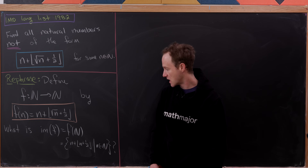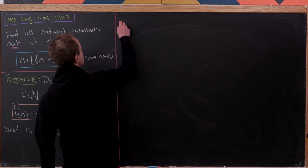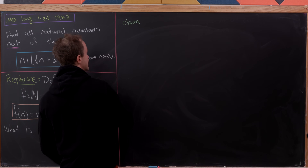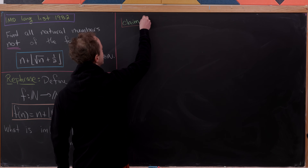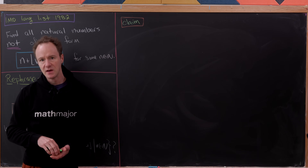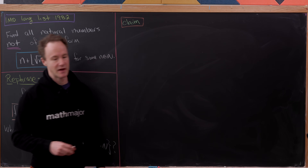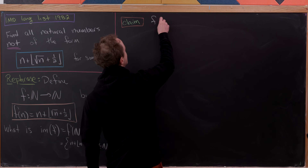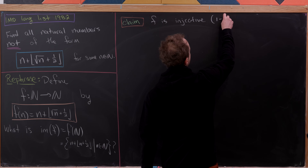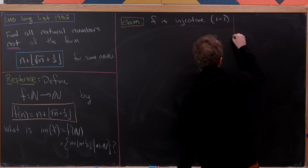We're going to start by proving the following claim. Step zero would be to make a little chart of what's going on with some small values of n — that's a good exercise for you to do. Here's our claim: f is injective, in other words it is a one-to-one function.